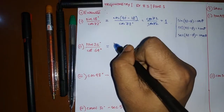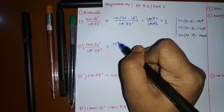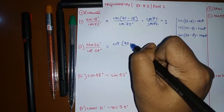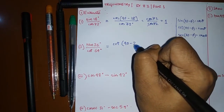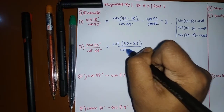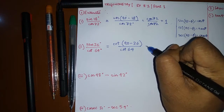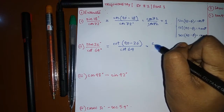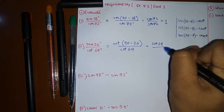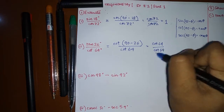Now let's move on to the second one. It's similar to the first one. You have to convert tan into cot: cot(90° − 26°) / cot 64°. Subtract 26 from 90, you'll get cot 64° / cot 64°, which is equal to 1 again.